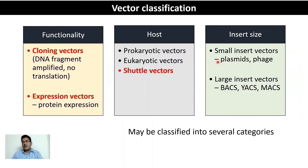Based on insert size, you could have small insert vectors like plasmids and phages, and large insert vectors like bacterial artificial chromosomes, yeast artificial chromosomes, and mammalian artificial chromosomes. We now move on to discuss the properties of the simplest vectors — plasmids.